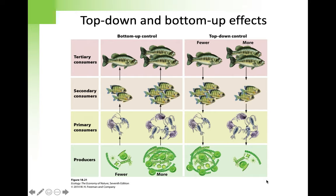Sea otters — the predators — were controlling the urchins that fed on the kelp. Remove the sea otters and the kelp forests disappear. Payne called these cascading effects of one species downward upon others trophic cascades.